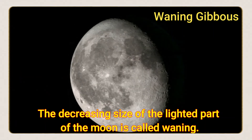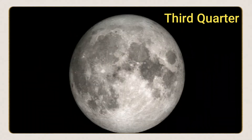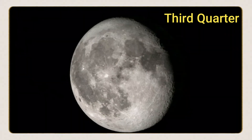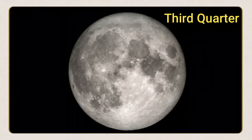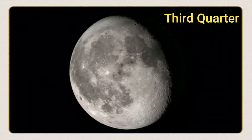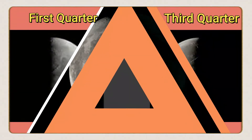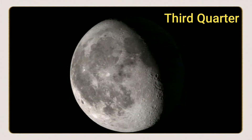Next is the half moon or third quarter. When the opposite half of the moon is illuminated compared to the first quarter, it is called the third quarter phase. Half of the moon is illuminated and visible.